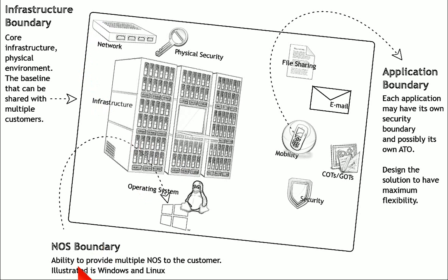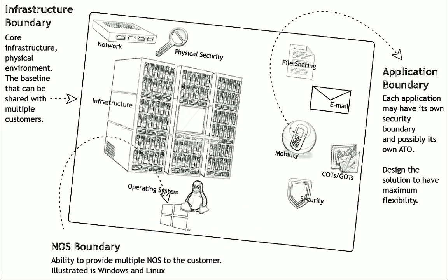Then we have our secondary boundary called the network operating system boundary. Here we're really talking about the operating system itself — Linux, Windows, for example — it could be any operating system. We're talking about the ability to have something to run on top of the infrastructure. Historically, the infrastructure would create a virtualized environment, and then we would layer on an operating system as a secondary boundary.